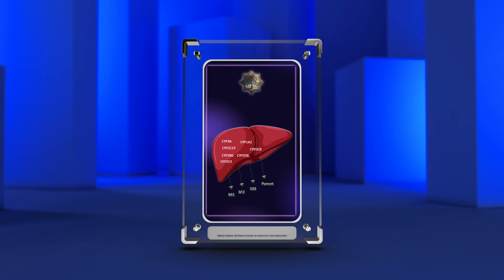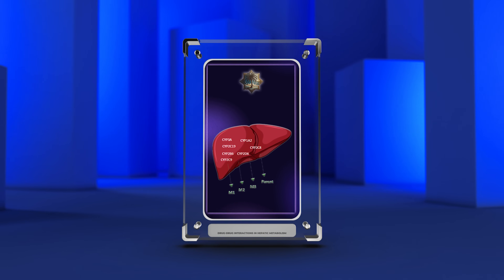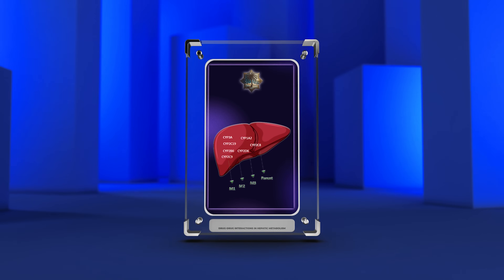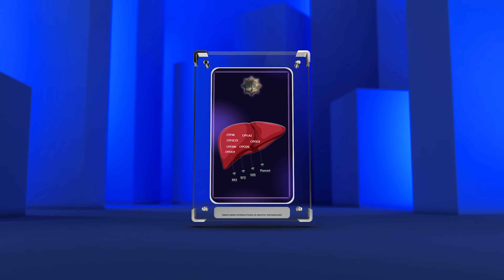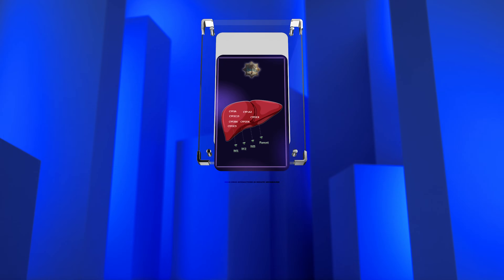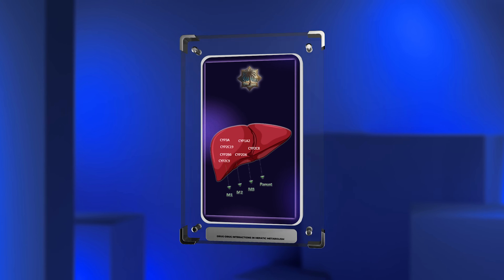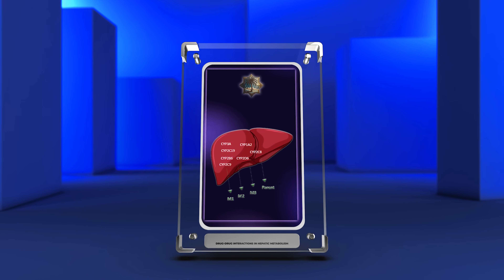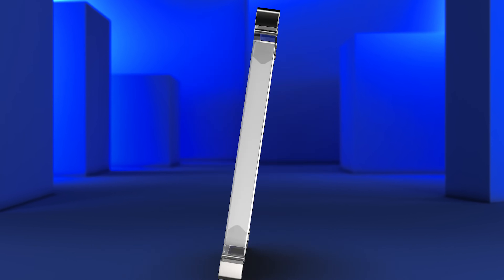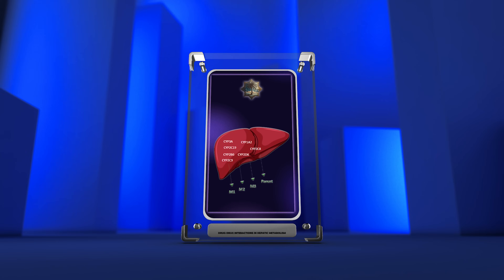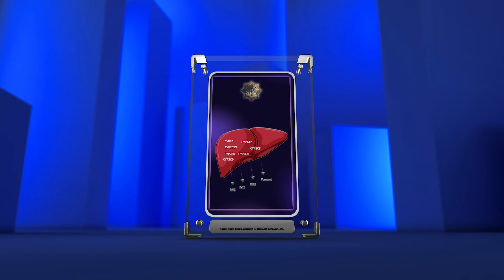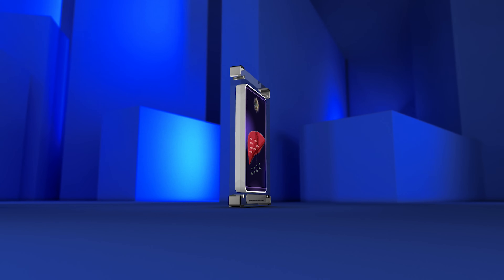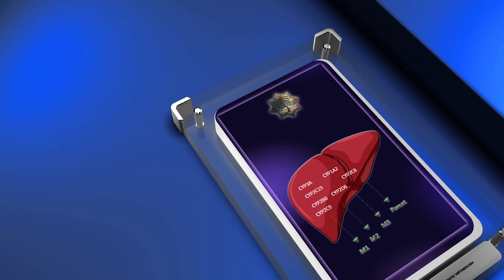In this script, we will explore 12 important topics related to drug interactions, including the role of specific enzymes and transporters, genetic variations, and the impact of certain substances on drug metabolism. Each topic will be discussed in detail to provide a comprehensive understanding of the subject matter.